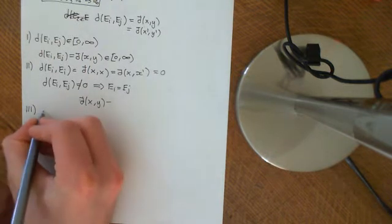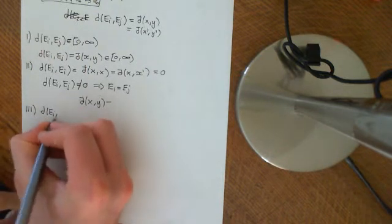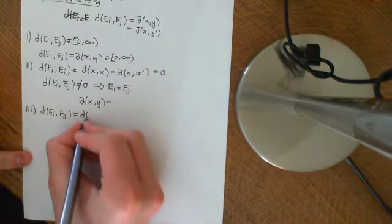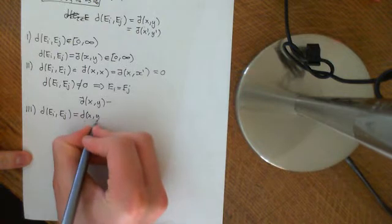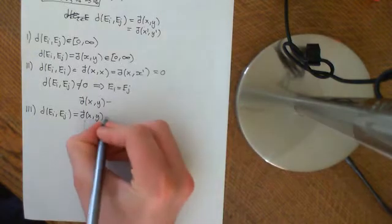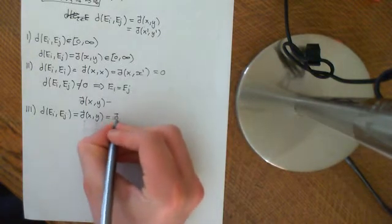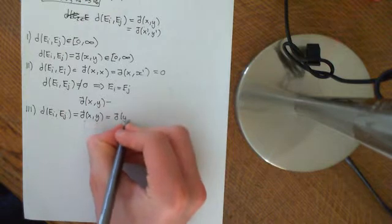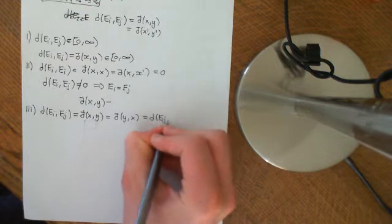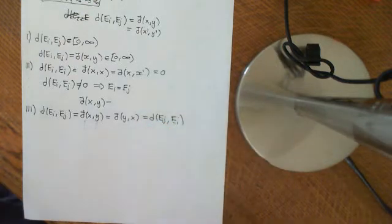Property three: symmetry. The distance between Ei and Ej should equal the distance between Ej and Ei. From the definition, this is d-bar(x, y) for representatives x of Ei and y of Ej. By the axioms of pseudometrics, this equals d-bar(y, x), which is the distance between Ej and Ei. So symmetry of this distance function comes from the symmetry of the pseudometric.